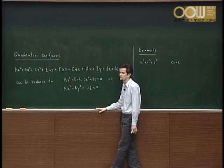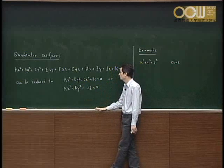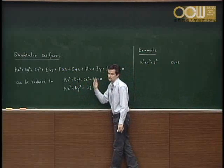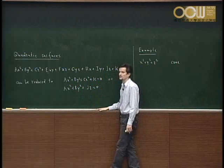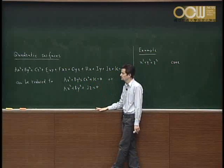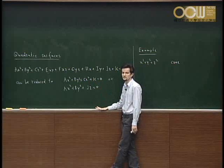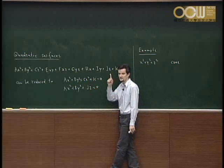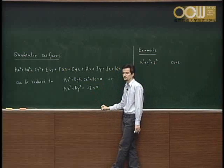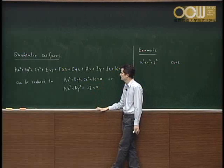Now we look at the first equation. How many types do we get? It's not possible that all coefficients are larger than zero, because then you have no x, y, z satisfying the equation. So there are only two situations left: either exactly one of them is negative, or exactly two of them are negative.